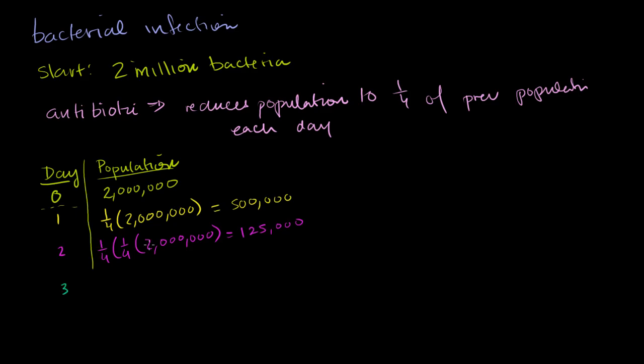On day 3, it's going to be one-fourth times this thing. So it's one-fourth times one-fourth times one-fourth times 2 million, which is essentially 125,000 divided by 4. But the important thing is I want you to see this pattern. In general, the population on day n is going to be equal to one-fourth to the nth power times our starting population, times 2 million.